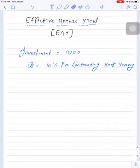Effective annual yield. We are doing an investment of 1000 rupees, rate of return is 10% per annum compounding half yearly.